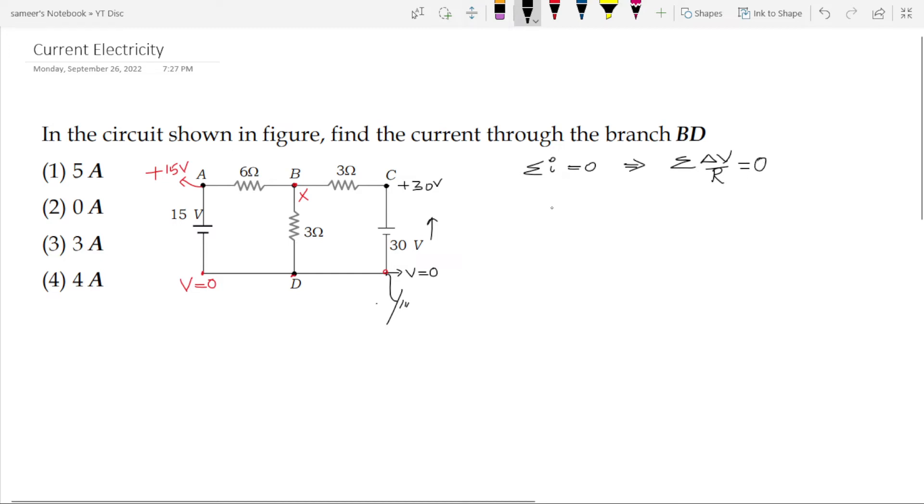which can also be written as from Ohm's law sigma delta v upon r is equal to 0. Let us apply sigma delta v by r equal to 0 to branch B.